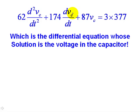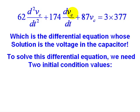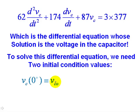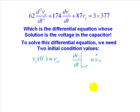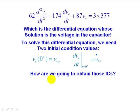But to solve this differential equation, we need two initial condition values. We need the initial value of the voltage in the capacitor, Vc(0), and we need the initial value of the derivative dVc/dt at zero plus as well. We need Vc at zero plus, and we need dVc/dt also at zero plus — that is, right after we move the switch.